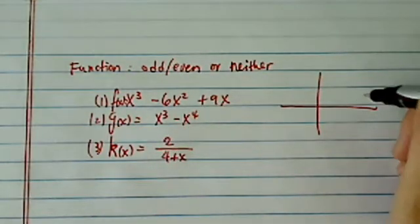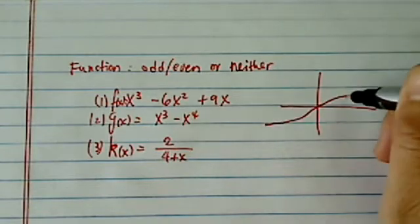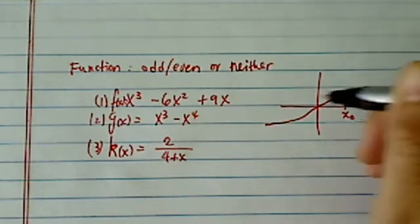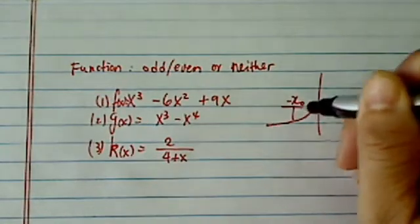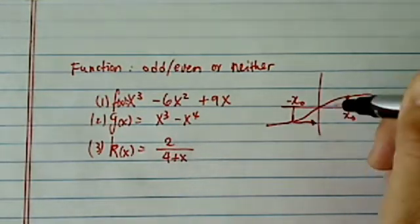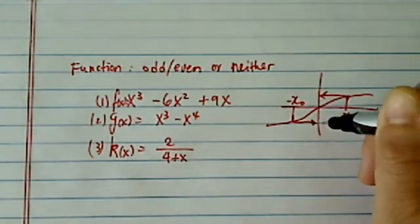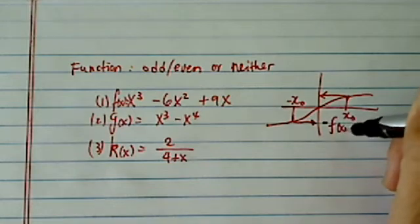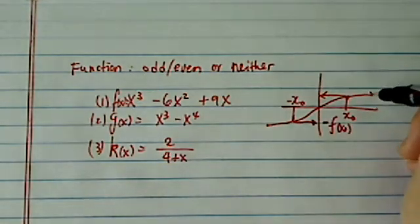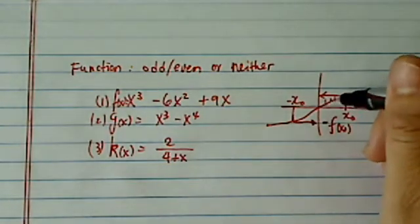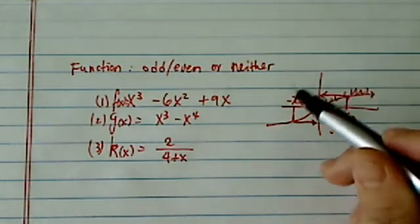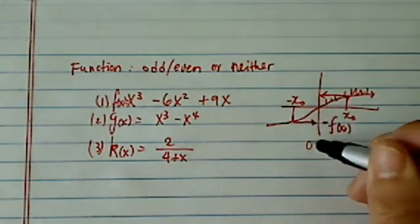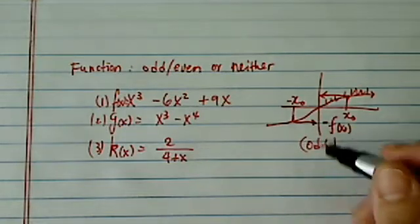An odd function is a function where if you have x₀ and replace that with minus x₀, you should have the function value back but with a negative sign. So basically, graphically, if you grab this function, this portion of function, and rotate at 180 degrees, it will land right on top of each other. This is the odd function.